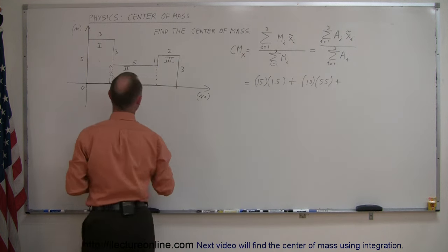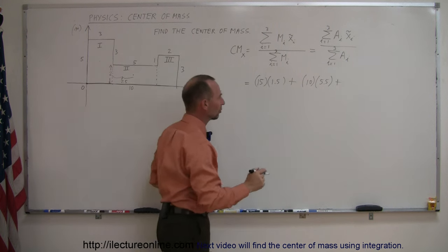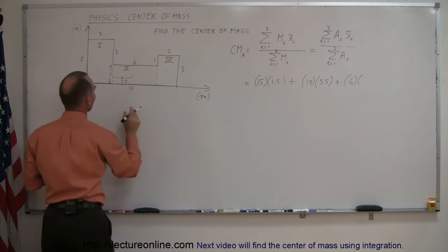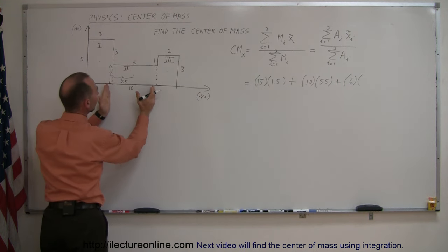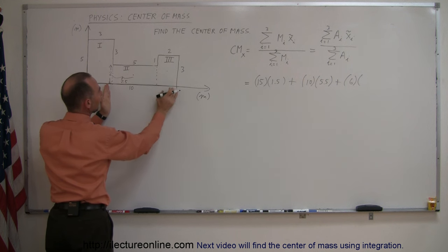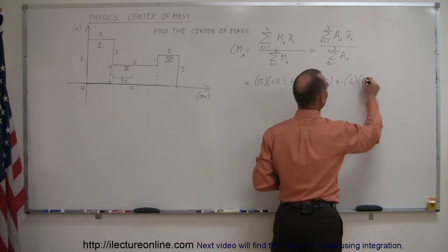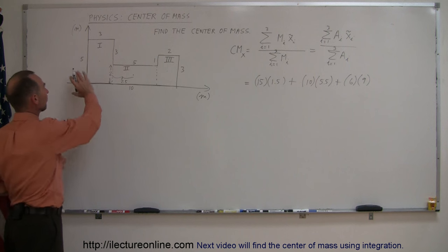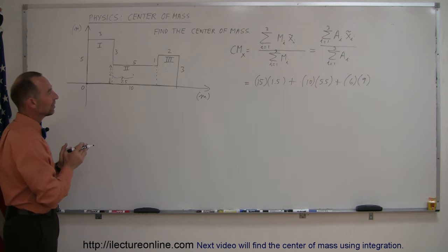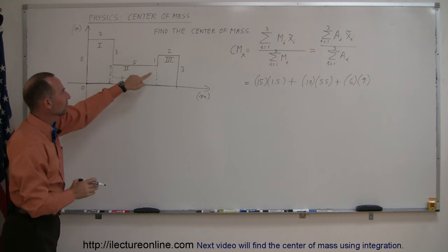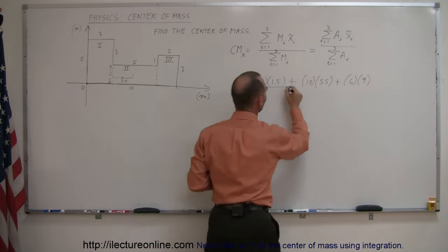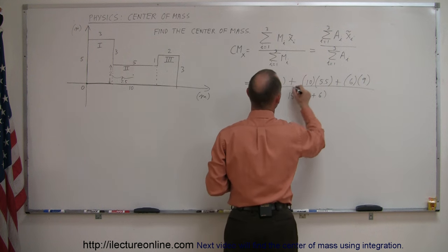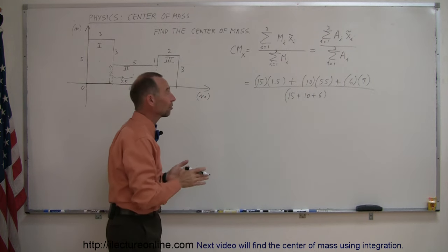And finally the last piece: that piece is 2 wide and 3 high, so 2 times 3 is 6 square meters. The center of mass of that area: 3 plus 5 is 8, and halfway between 8 and 10 would be 9, so that's 6 times 9. So we've multiplied the area of each portion times the x-coordinate of the center of mass of each piece, and divide by the sum of all the areas, which is 15 plus 10 plus 6.